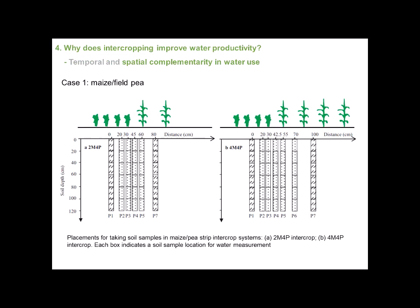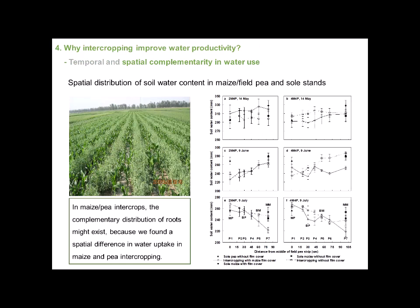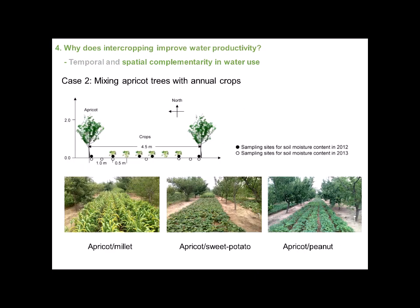We also measured soil water content at different places to explore spatial complementarity. In maize-pea intercropping, a complementary distribution of roots may exist, because we found a spatial difference in water uptake between maize and pea in intercropping.